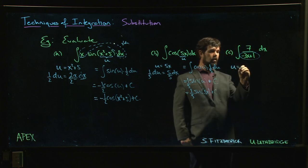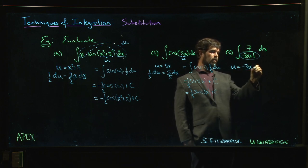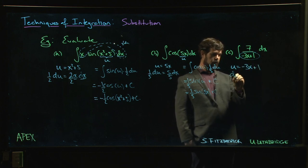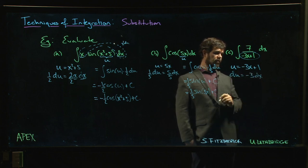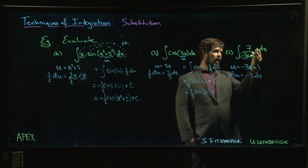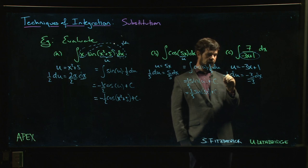Let's substitute the whole denominator. If you're not sure, this is always a good choice. Let u equal minus 3x plus 1. du then is minus 3 times dx. I don't see a minus 3 there, so we'll divide by it.